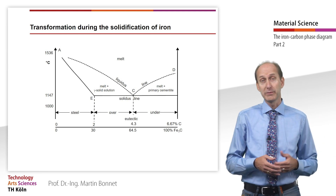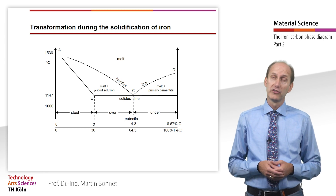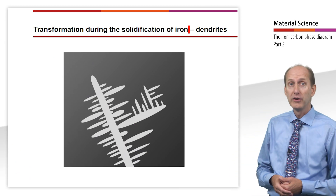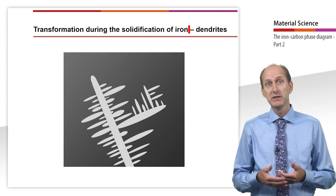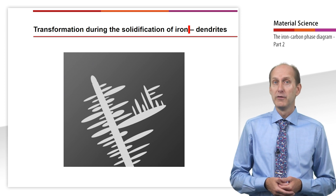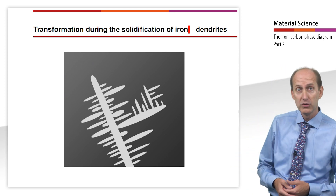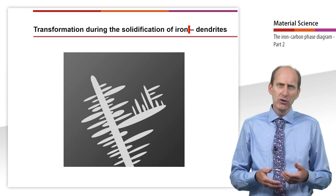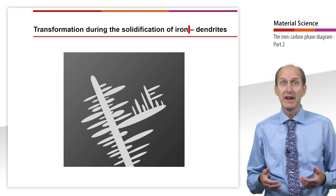A carbon content of 6.67% corresponds to a cementite content of 100%. All alloys in the carbon content range of 0 to 2% behave like the basic type — complete solubility in liquid and solid state. Thus, below the liquidus, formation of solid solution occurs. The gamma solid solutions are able to grow in the melt without any constraint and form elongated structures with branches to the sides, which are referred to as dendrites.